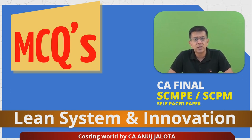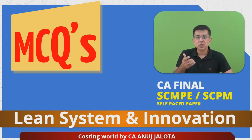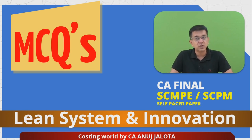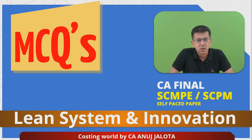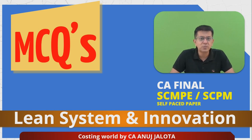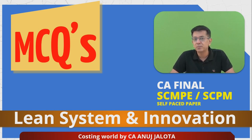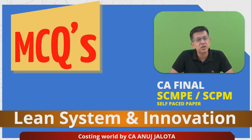There was one gentleman called Nakajima. He made a measure to determine whether your TPM program is working fine or not. He developed the concept of OEE — Overall Equipment Effectiveness. He said that if your program is working fine, your OEE should be 85% or more.